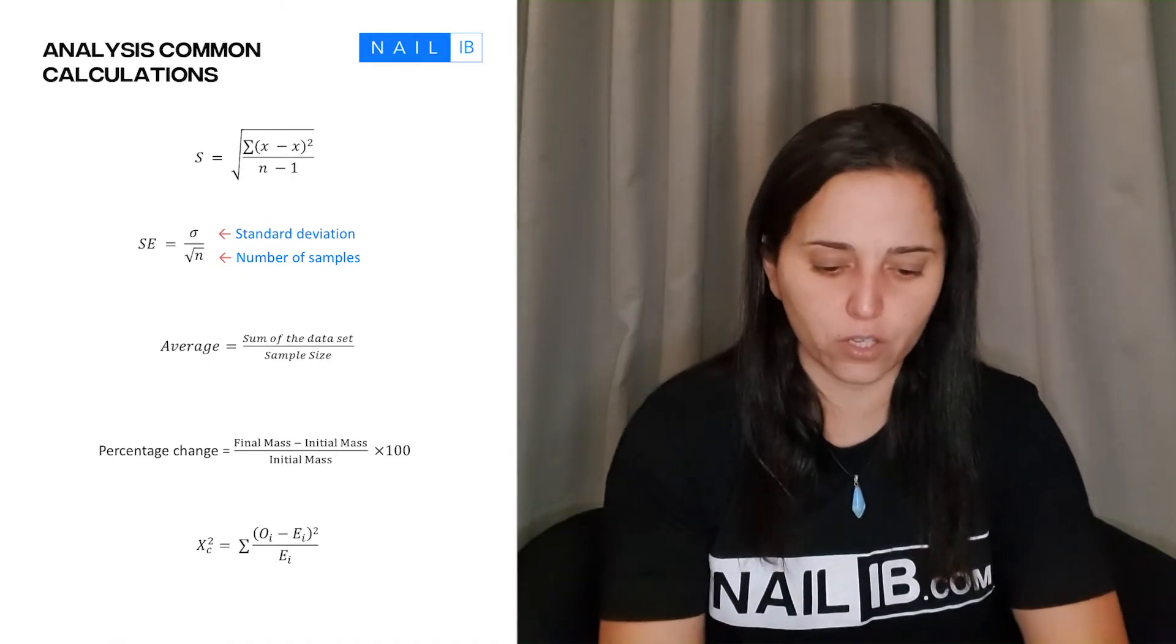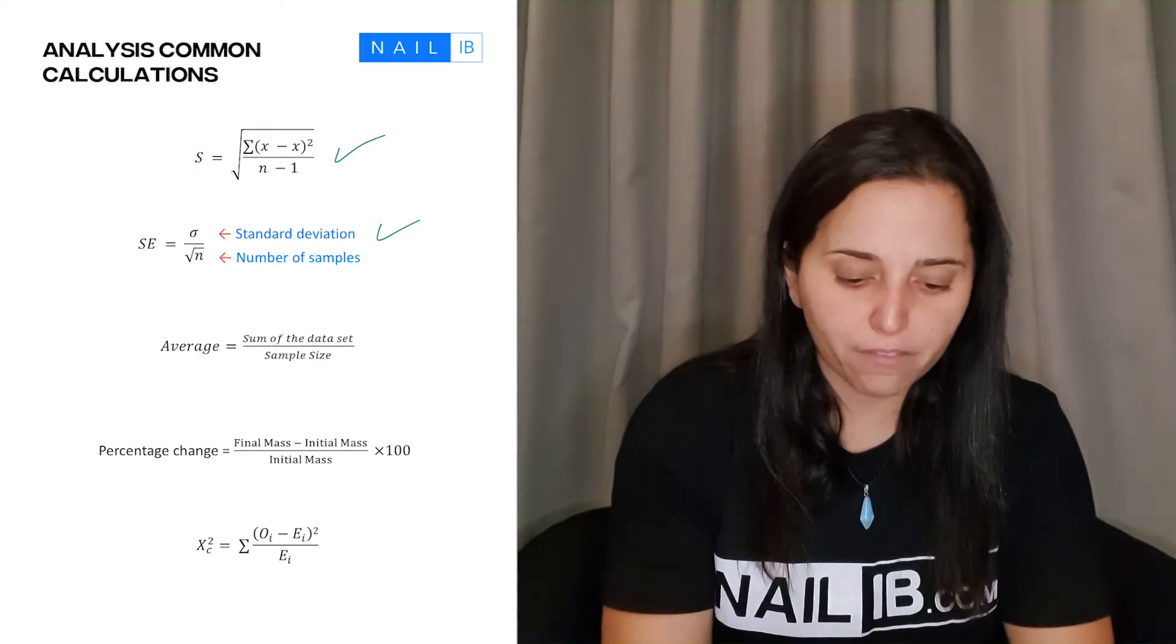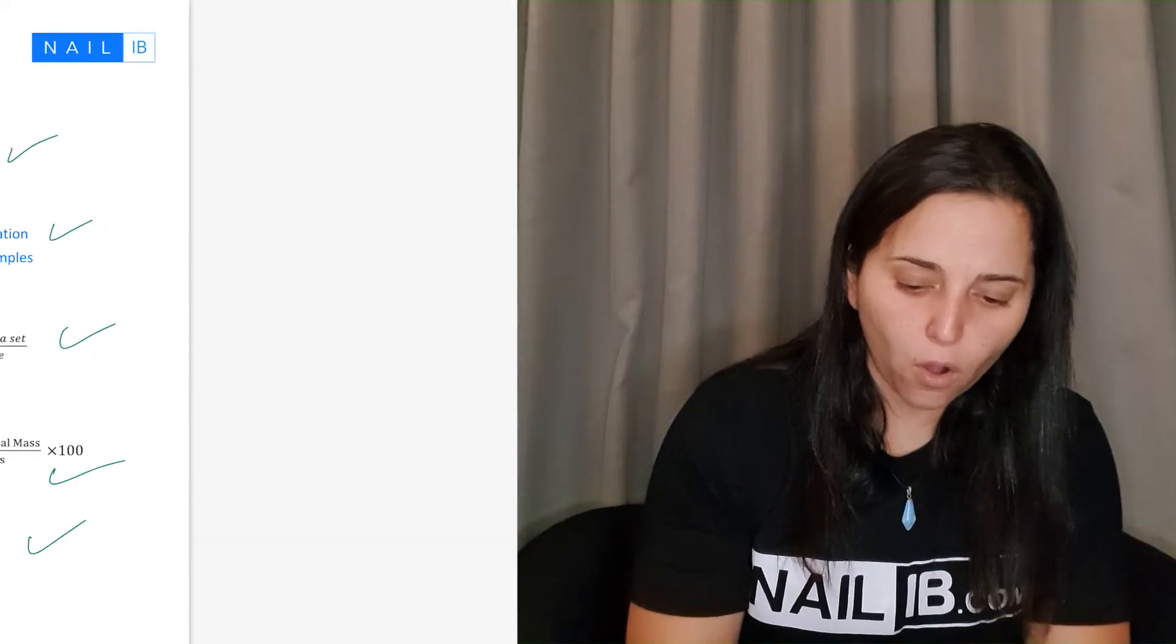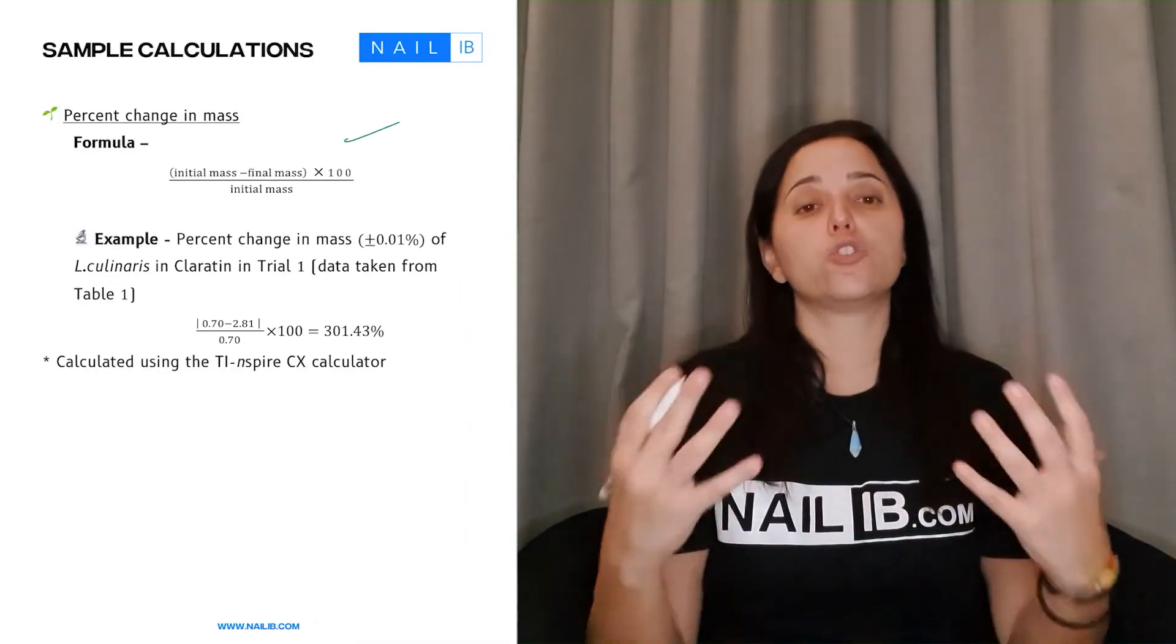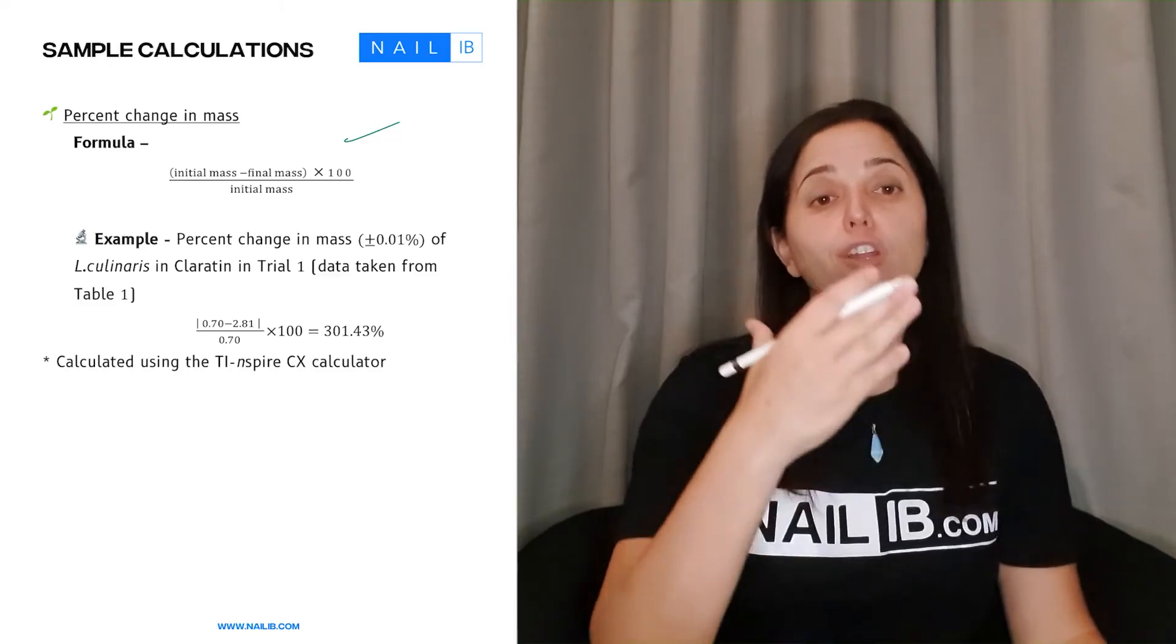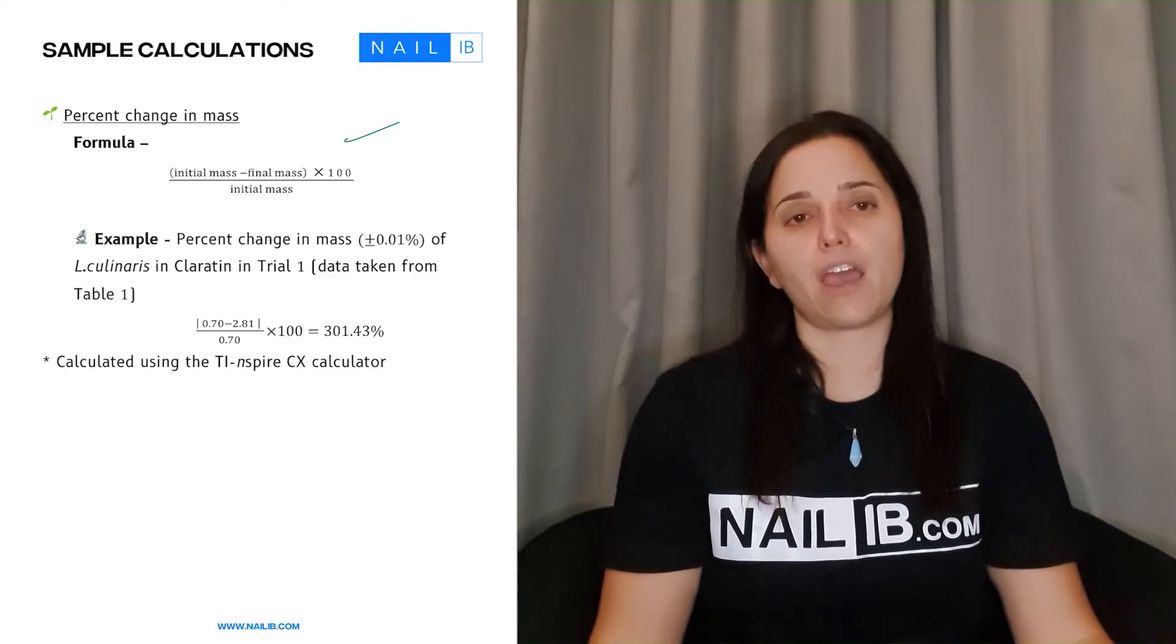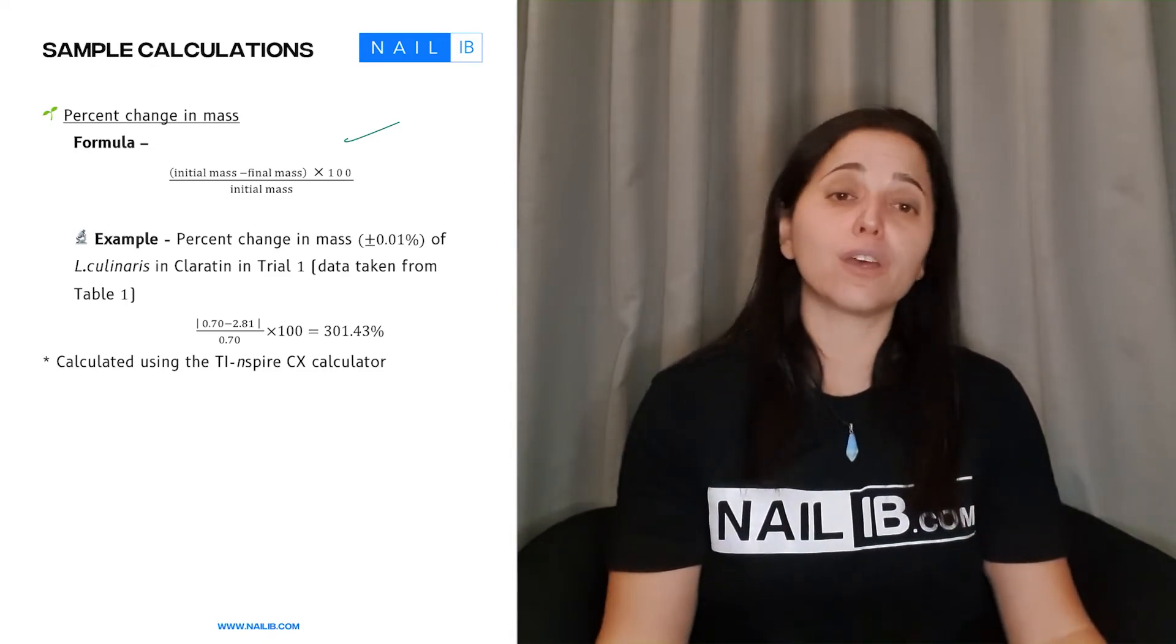So here are some of the equations that you can use. Of course you have the standard deviation, the standard error, you have the average percentage change, and you keep going with all the other formulas there. This is what you do. It's up to you in your lab what exactly. Well, the most common things here usually is the average should be there, the average and standard deviation. Those two are very common, so I would say get used to them.